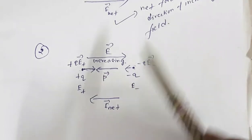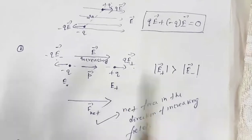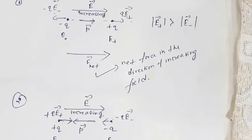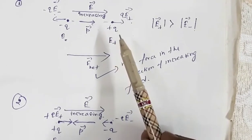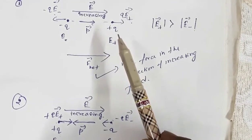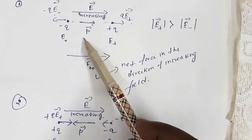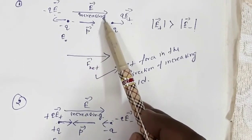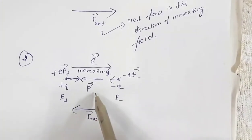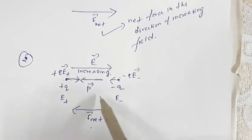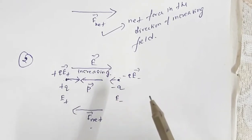So as you can see, the force experienced by the dipole depends on the orientation of the dipole. In the first case, the dipole moment is in the direction of the electric field and the force is in the direction of increasing field. In the second case, the dipole moment is opposite to the direction of increasing field, and the net force is in the direction of the dipole moment — the direction of decreasing field.